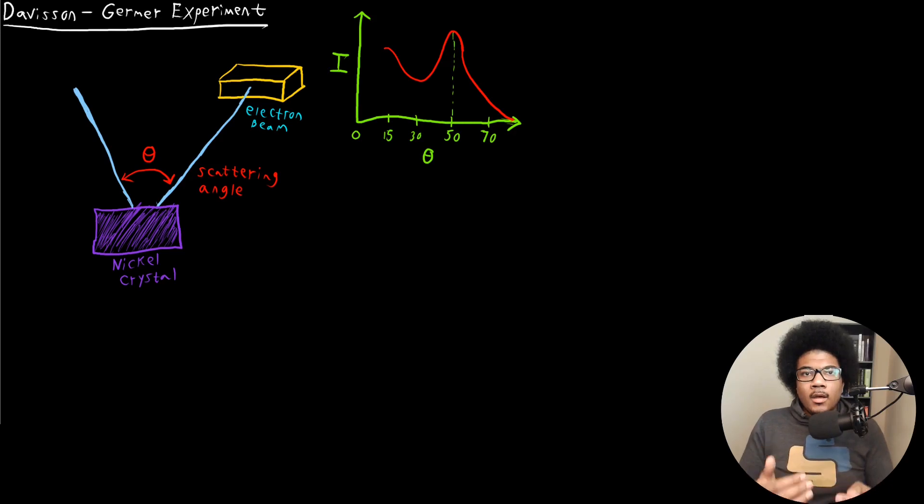In this video, we're going to look at the Davison-Germer experiment. If we're thinking about the photoelectric effect, it really proved one half of this wave-particle duality. It proved that electromagnetic radiation, which usually behaves like a wave, can behave like a particle.